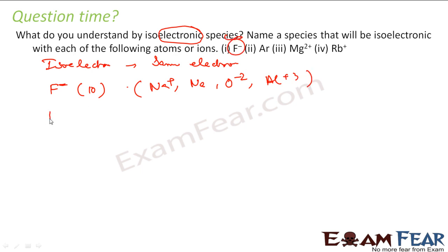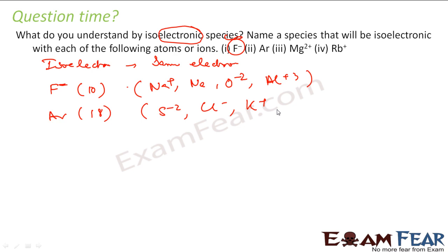Now we talk about argon. Argon has 18 electrons. So I can have: sulfur²⁻ will have 18 electrons, chlorine⁻ will have 18 electrons, potassium⁺ will have 18 electrons, and calcium²⁺ will have 18 electrons.